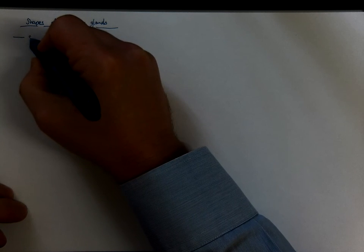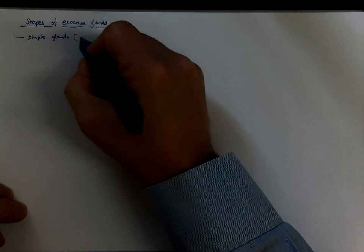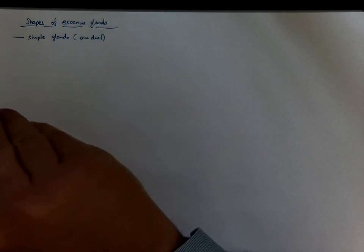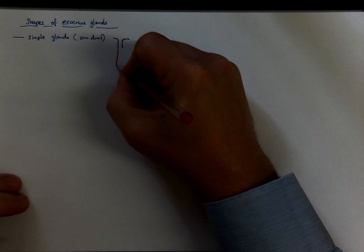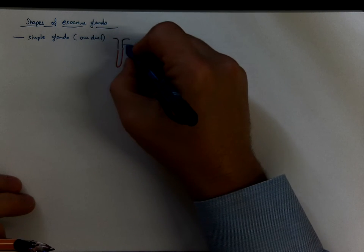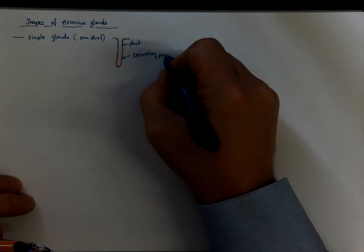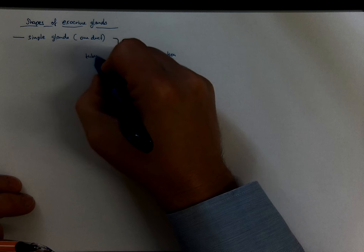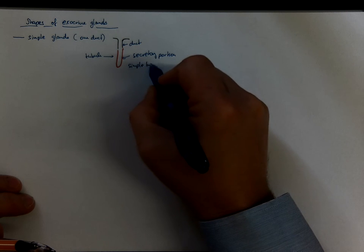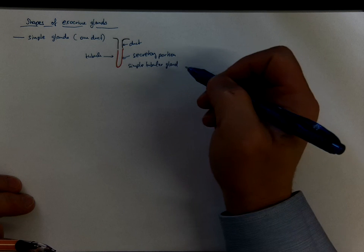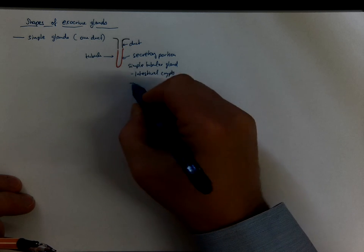If there is a single duct you call it simple gland. So we have simple glands with just one duct without any branching. The secretory portion could have a shape of a tubule. This would be a secretory portion. If it's a tubule you simply call it simple tubular gland. An example would be intestinal crypts or glands of the endometrium.